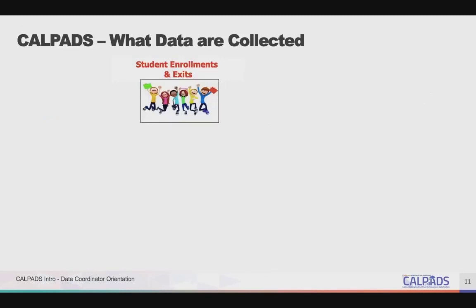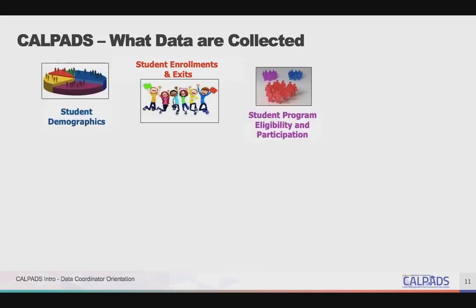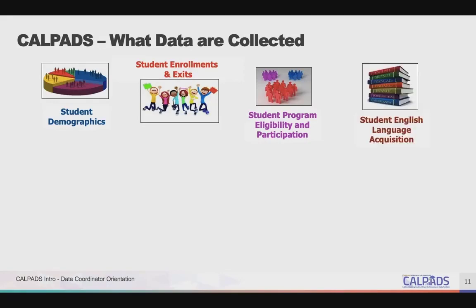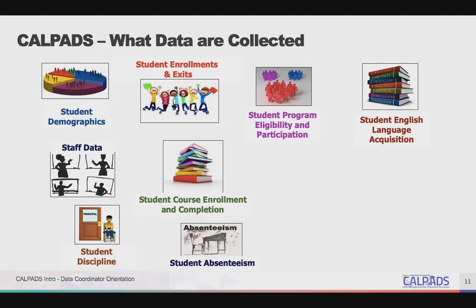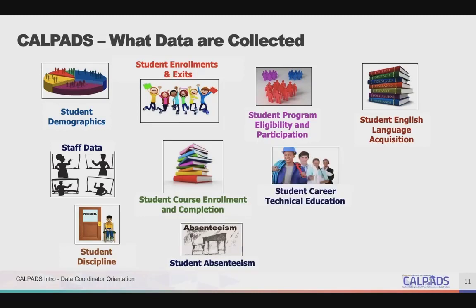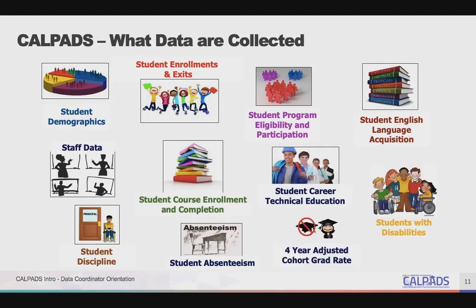Any time a student enrolls or exits in a California K-12 public school, that information should be reported in CALPADS, along with demographics, programs that students are eligible for and programs in which they participate, their English language acquisition status, and at specific times during the year, additional information is reported including course enrollment and course completion, staff teaching those classes and other certificated staff, disciplinary incidents, student attendance, career tech ed participants, concentrators and completers, graduates and other completers and dropouts, and students with disabilities.